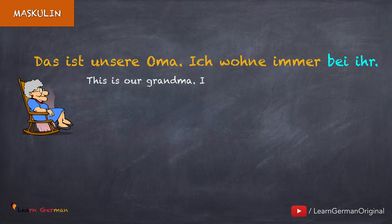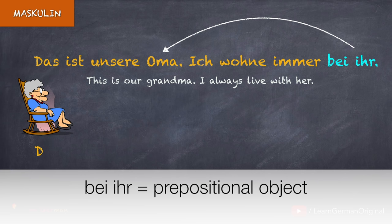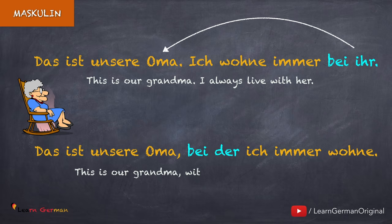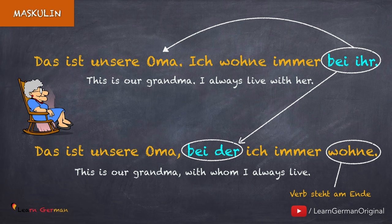Und jetzt hier ist ein Beispiel mit einer Präposition. Das ist unsere Oma. Ich wohne immer bei ihr. In this case, we have a prepositional object — bei ihr. Ihr is used for Oma. In the Relativsatz, we would say: Das ist unsere Oma, bei der ich immer wohne. Whenever we make a Relativsatz with a preposition, we always take the preposition along with the relative pronoun, depending on the case. In this case it's Dativ, so we say: Das ist unsere Oma, bei der ich immer wohne. The relative pronoun 'der' replaces the personal pronoun 'ihr'. The verb will be placed at the end.